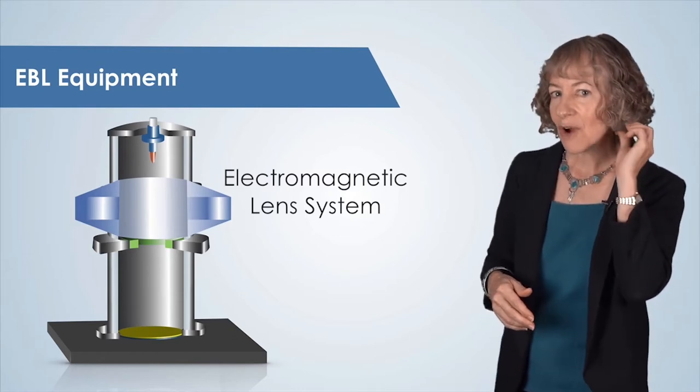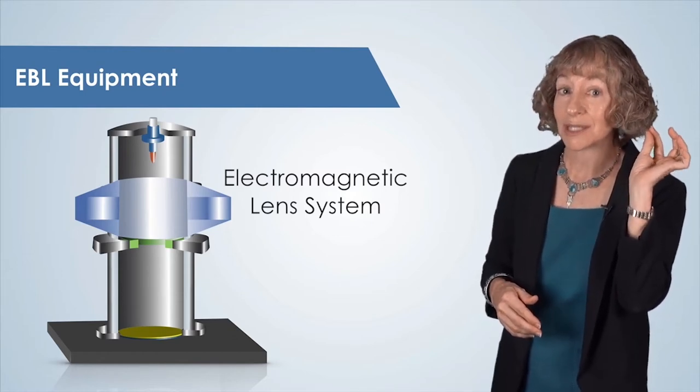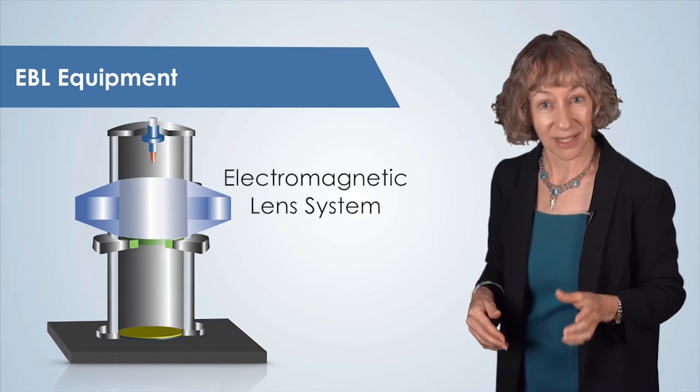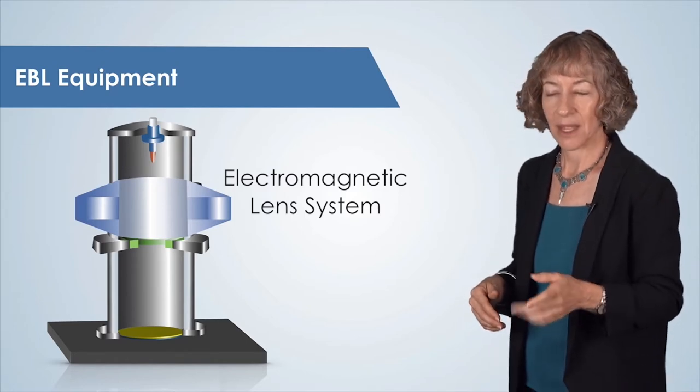Just for reference, the cross-section of a human hair is about 100,000 nanometers in diameter.